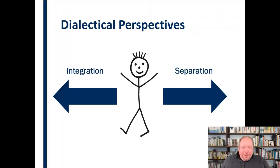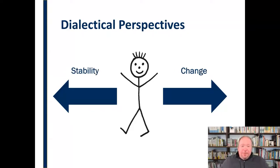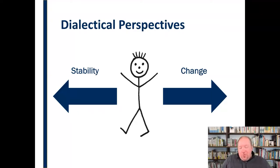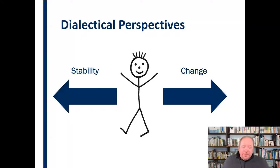We have other dialectics too, including stability and change. Each of us has at times a desire for consistency — to know what's coming, to be familiar, and to have things be certain. That's comforting. But other times we want something to change, something novel — we like new things and adventure. We're all being pulled in different directions at times through either stability or change.